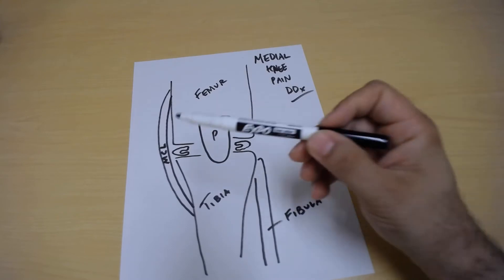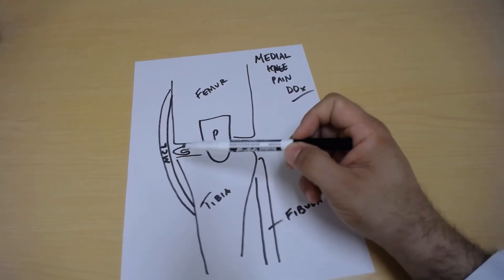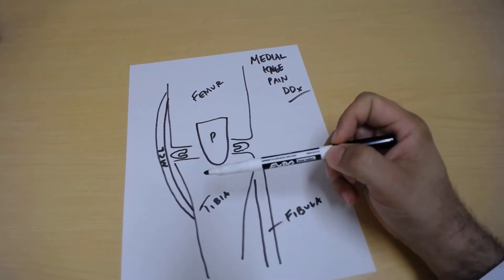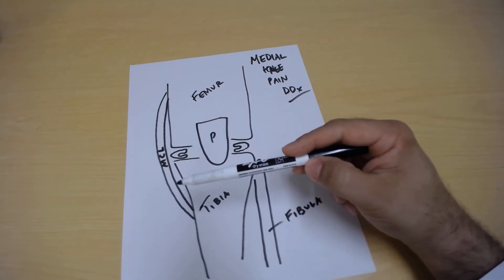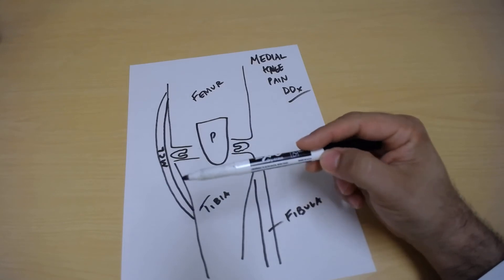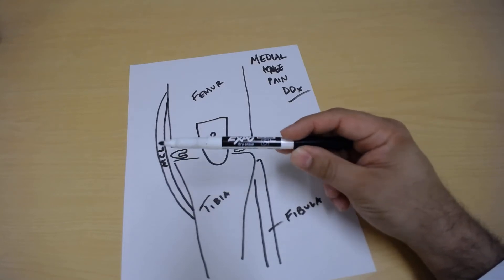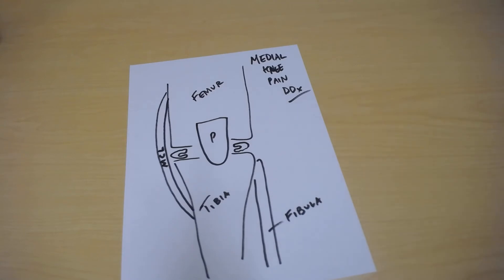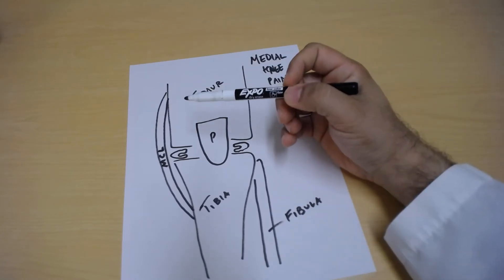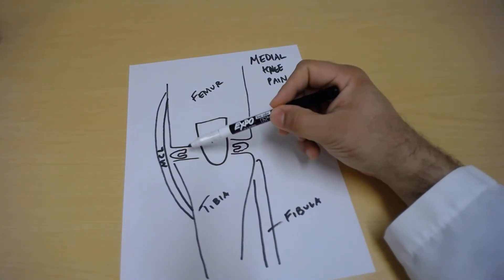One of the big differences between the MCL and the meniscus is that mechanism of injury. But traditionally because the MCL is outside the joint, if it's a mild injury to this ligament, meaning it's not a complete rupture or a complete tear of the MCL, you will not get swelling inside the knee joint. You'll get some swelling just on the medial side of the knee, but not inside the joint.